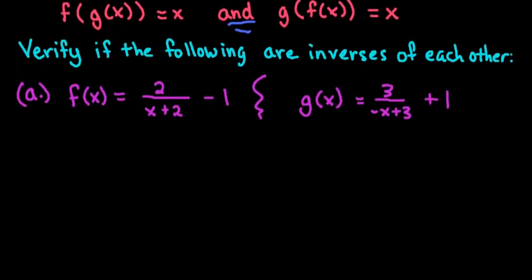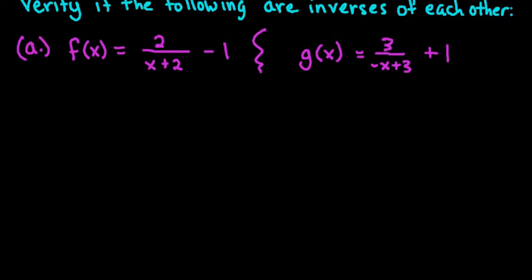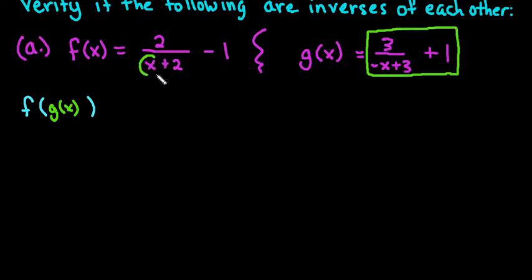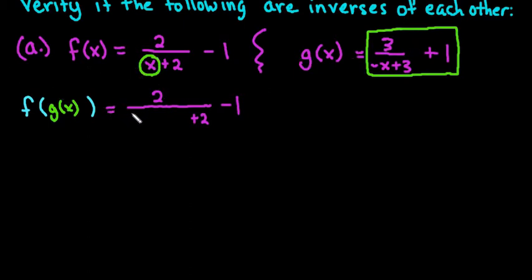I have a couple different problems to look at. The first one is kind of difficult. What we're going to do is take our f of x equation and replace into it our g of x equation. This is telling me I'm going to take this g of x equation and replace x with that value. Everything else in my f equation stays the same — the 2, the plus 2, and the minus 1 — only x changes, becoming 3 over negative x plus 3 plus 1.